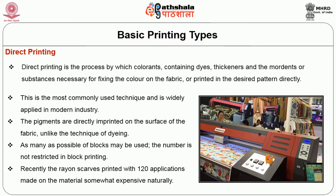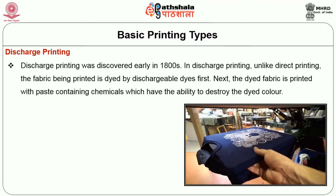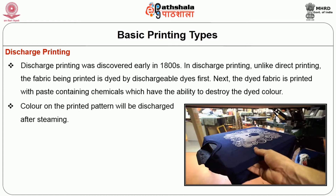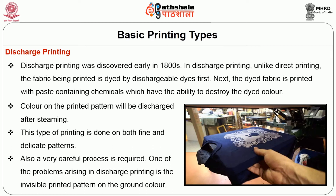Next, discharge printing techniques. Discharge printing was discovered early in the 1800s. In discharge printing, unlike direct printing, the fabric is first dyed with dischargeable dyes, and then printed with a paste containing chemicals that have the ability to destroy the dyed colors. The color on the printed pattern will be discharged after steaming. This type of printing is done on both fine and delicate patterns, requiring a very careful process. One problem in discharge printing is the invisible printed pattern on the background colors.